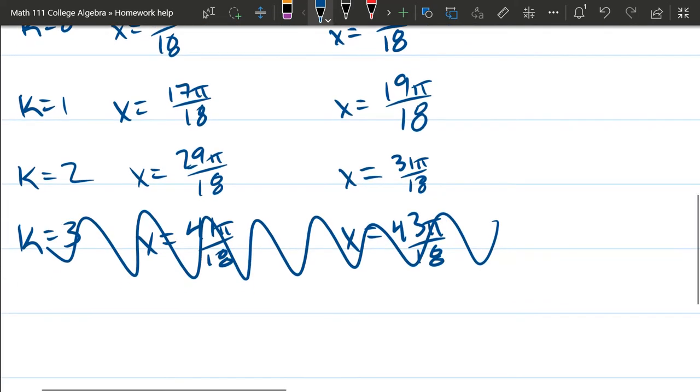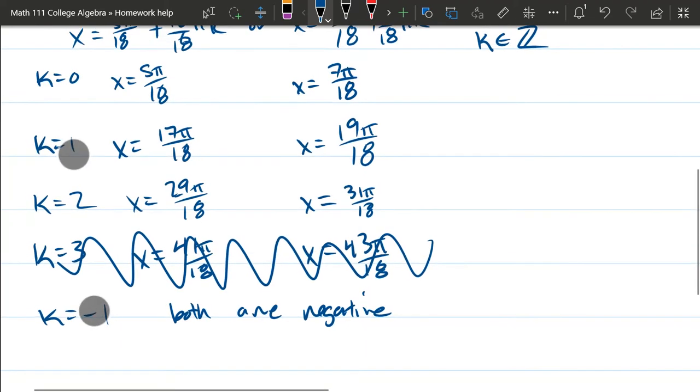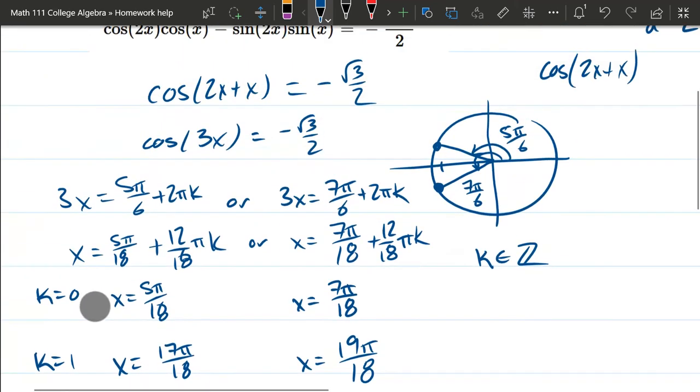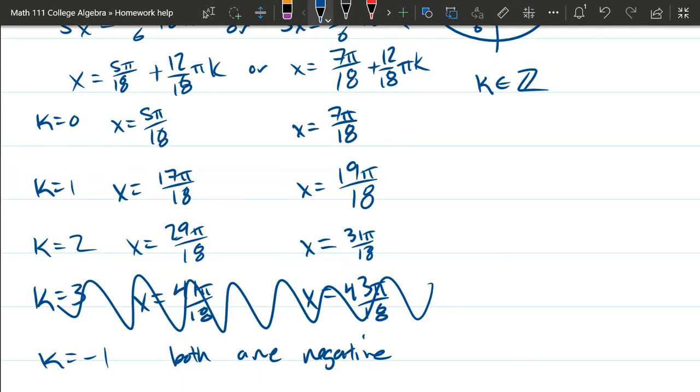I could try k equals negative 1, but you're going to find out that both are negative and they won't work either. So hopefully this was helpful in solving this problem. There are six solutions. You're going to have to enter them following the instructions.